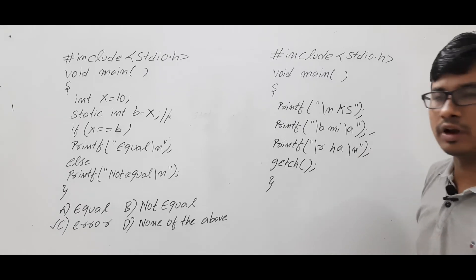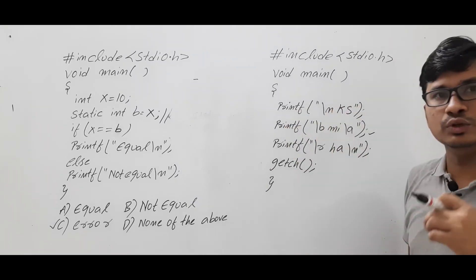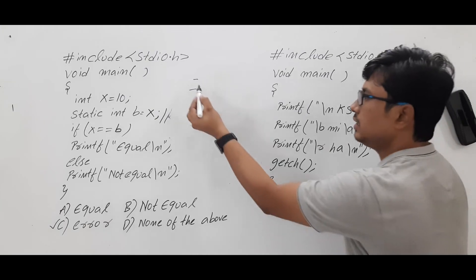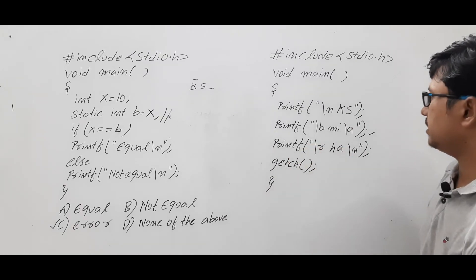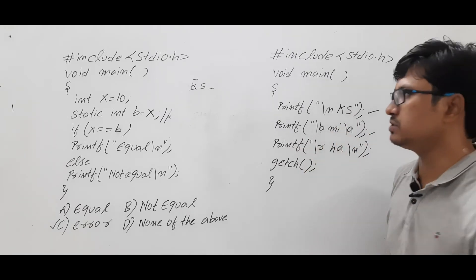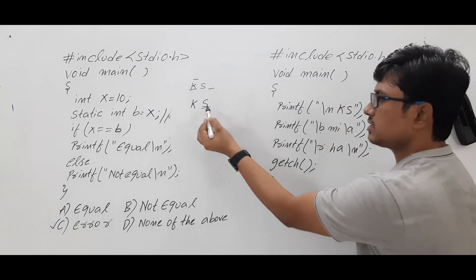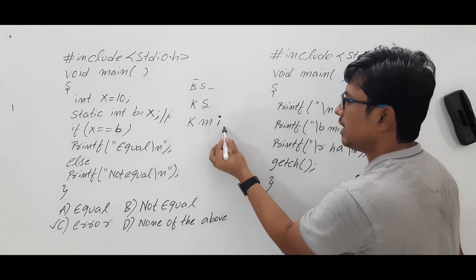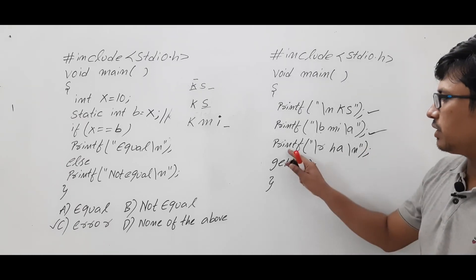When executing the program, the cursor starts at the beginning. The first printf has '\n', so the cursor moves to a new line. Then 'ks' is printed — 'k' is printed, 's' is printed, and the cursor is at the next position. Then '\b' is backspace, so the cursor moves back to point at 's'. Then 'mi' is printed: in place of 's', 'm' is printed, then 'i' is printed. Then '\a' — a bell sound occurs.